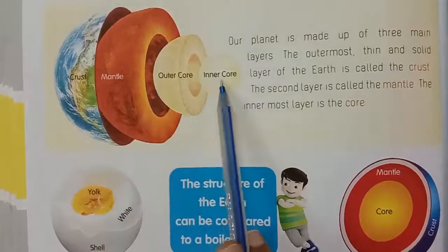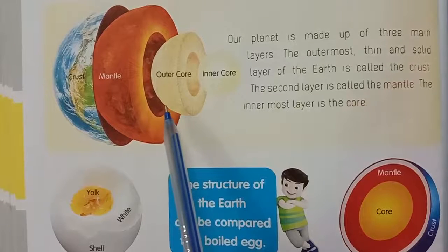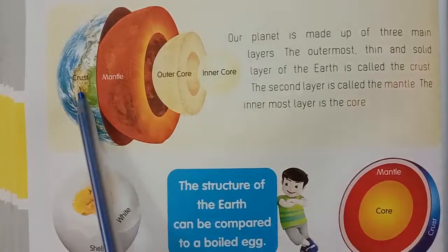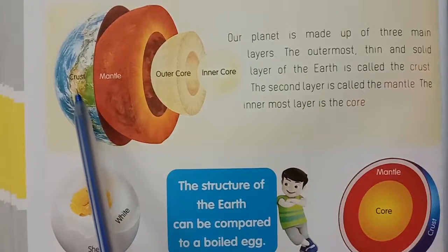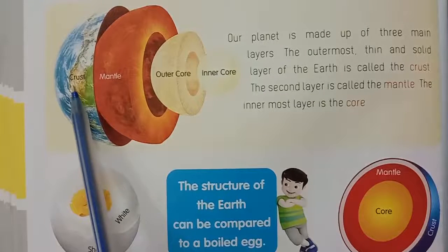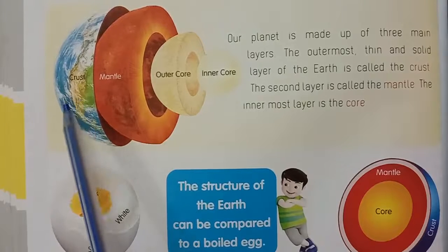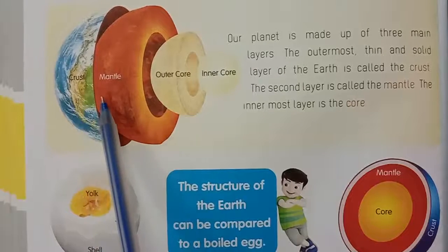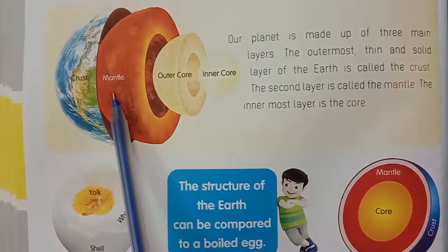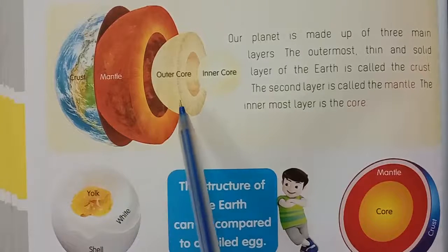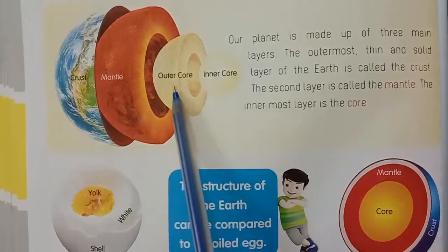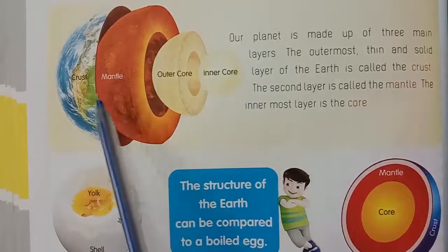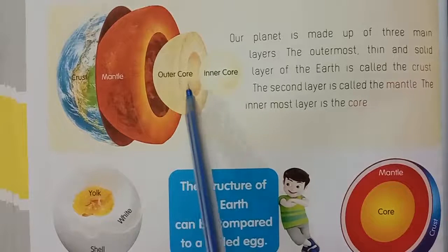Our planet is made up of three main layers. The outermost thin and solid layer of the Earth is called the crust. The second layer is called the mantle. The third, innermost layer is the core — outer core and inner core. Three layers: first, crust; second, mantle; third, core — outer core and inner core.